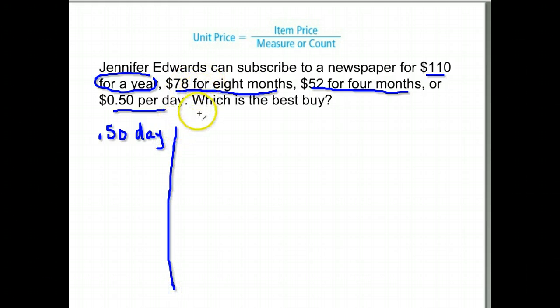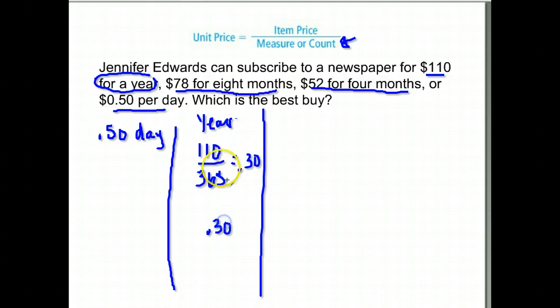Let's do the year. The yearly rate was $110 for a full year. Well, how many days are there in a year? Because that would be our count of how many papers. There are 365 days in a year. 110 divided by 365 gives me 0.30, 30 cents. So clearly, so far, buying it for the full year is much cheaper than buying it every single day.